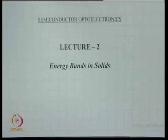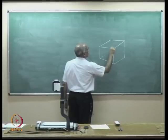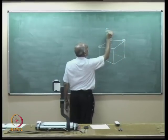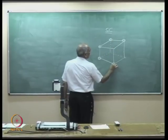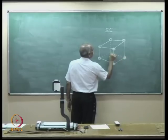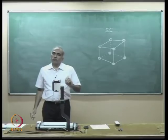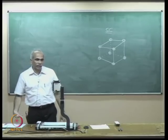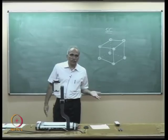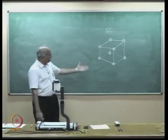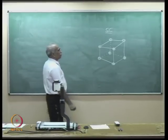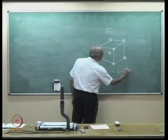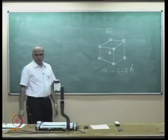I want to calculate how many atoms are present per unit volume of the material. Most semiconductors have an inter-atomic spacing A in the range of 3 to 7 angstroms. We need this to determine the carrier concentration and thereby the electrical properties.